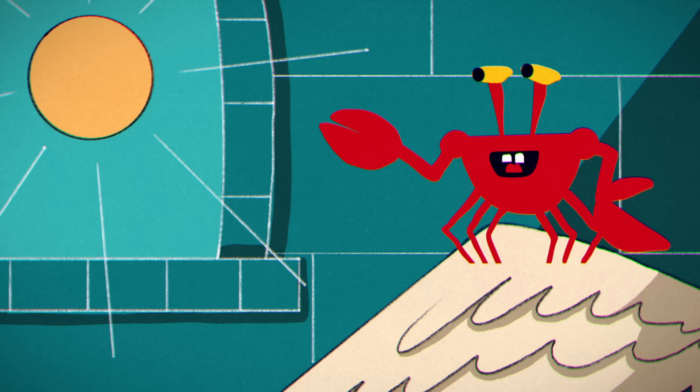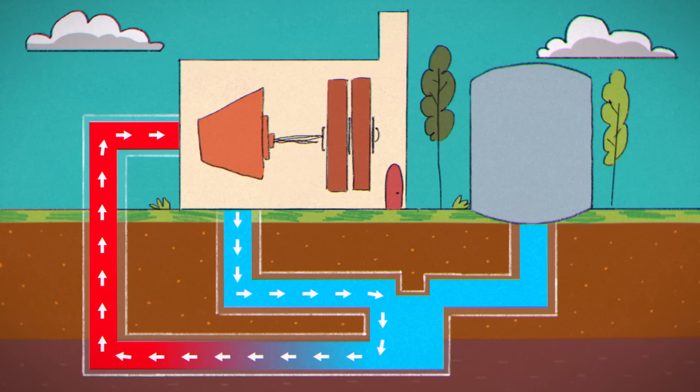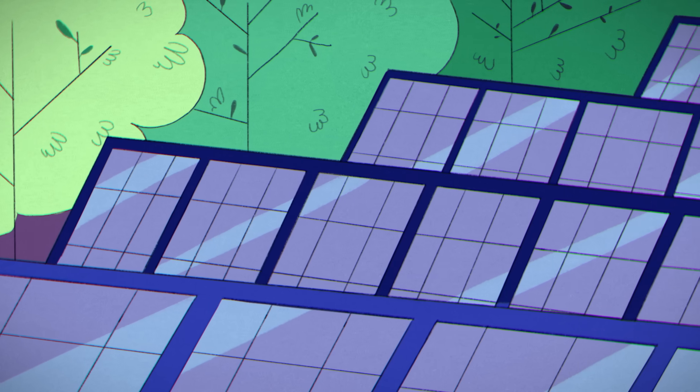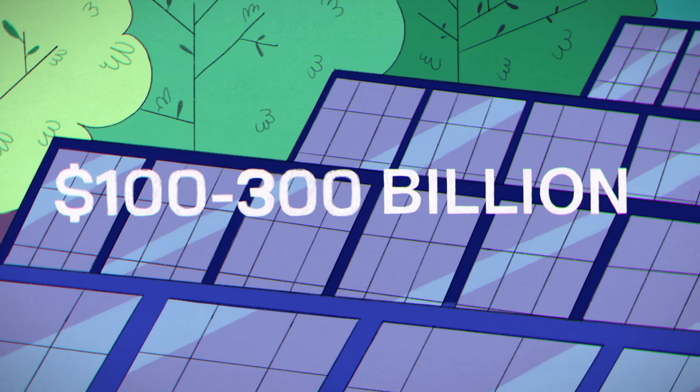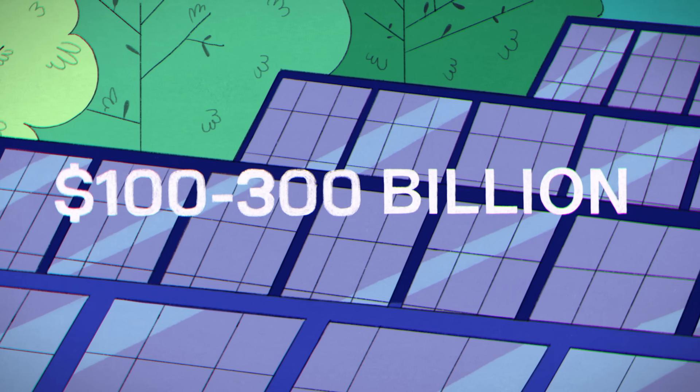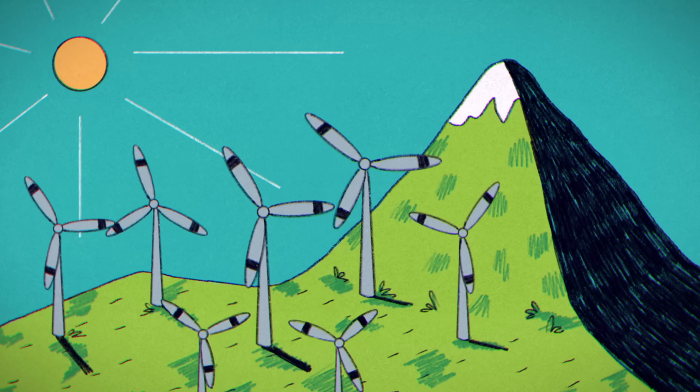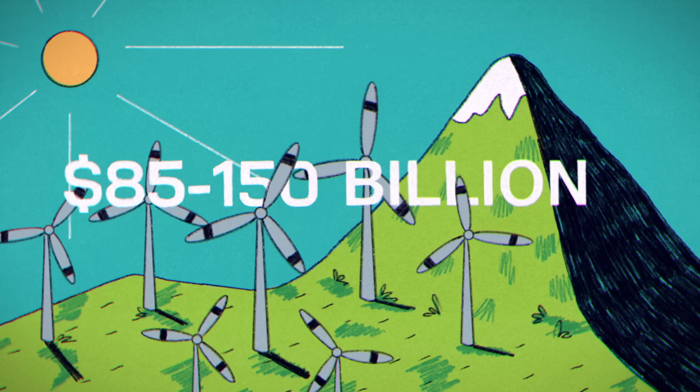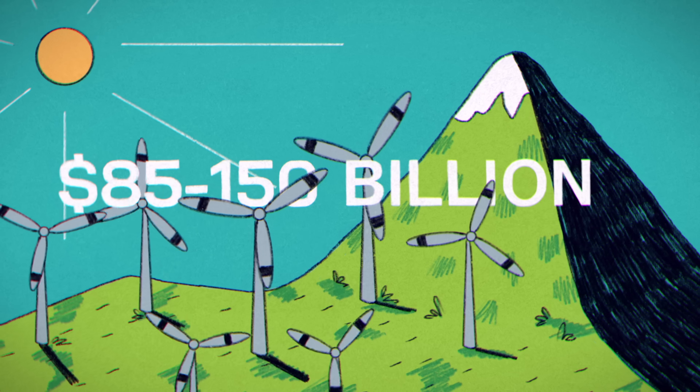The sun provides Earth with all its energy, aside from geothermal and nuclear. As of 2023, the global solar market was worth between 100 and 300 billion dollars. Wind energy, which comes from the sun unevenly heating the atmosphere, was valued somewhere between 85 and 150 billion dollars.